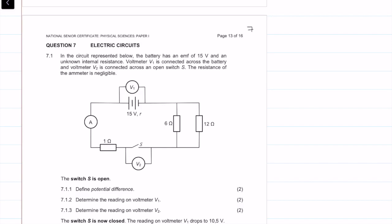Question 7.1.1 — the switch is open, so it's in the configuration we see here. It says define potential difference. Potential difference is the work done per unit of positive charge. It's a simple definition and we get two marks for that.